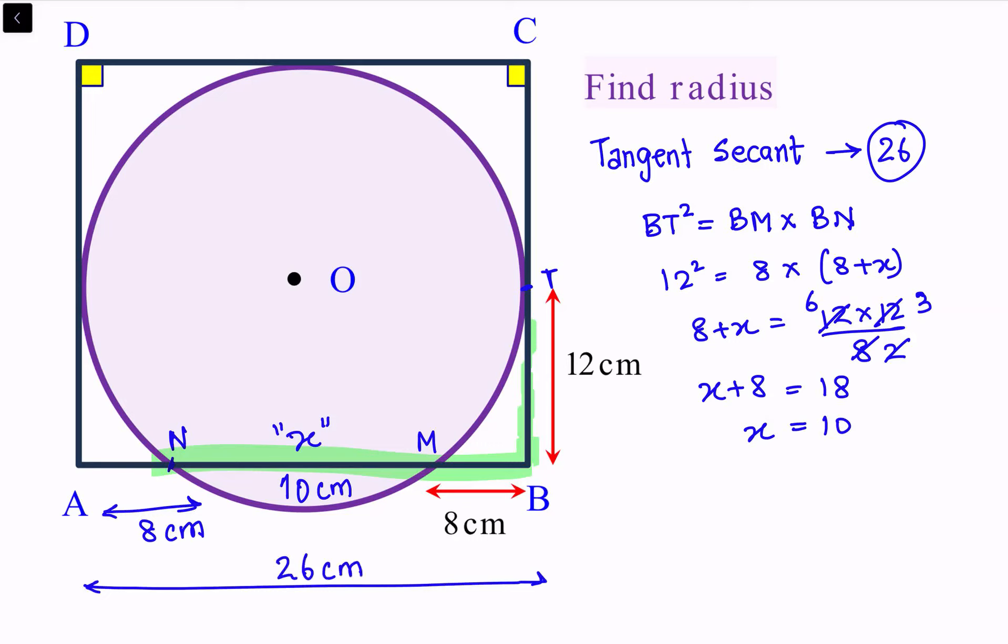The length of AB is same as the diameter of the circle. So diameter of the circle is 26 centimeters, and the radius is 13 centimeters. And that's our answer.